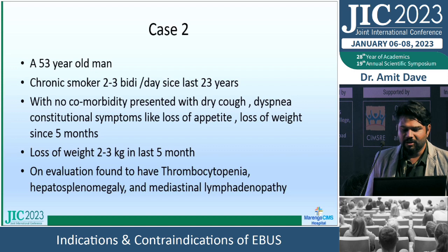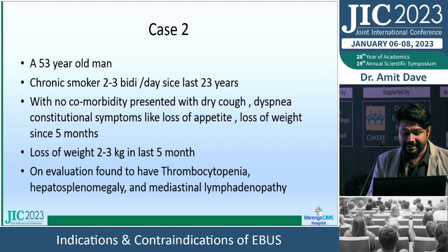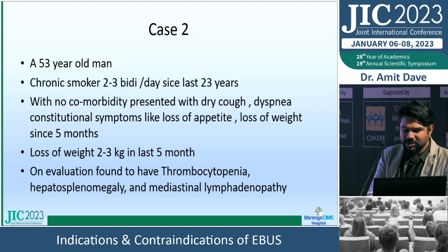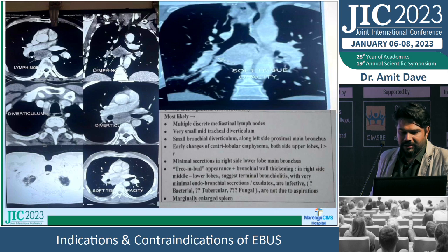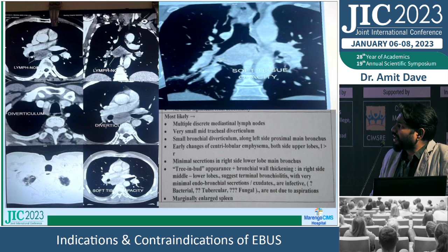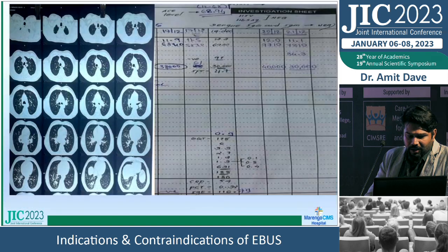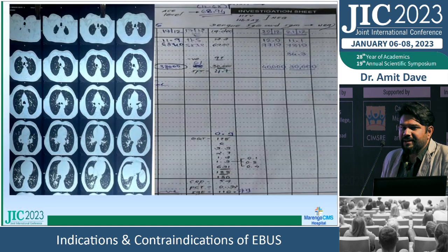Case 2: A 53-year-old chronic smoker, 2-3 bidis per day for 23 years, no comorbidities, presented with dry cough, dyspnea, constitutional symptoms — loss of appetite and weight loss of 2-3 kg over five months. Found to have thrombocytopenia, hepatomegaly, and mediastinal lymphadenopathy. CT showed a huge subcarinal node, soft tissue opacity in the right intermediate bronchus, and hepatosplenomegaly. Platelet count was 30,000.